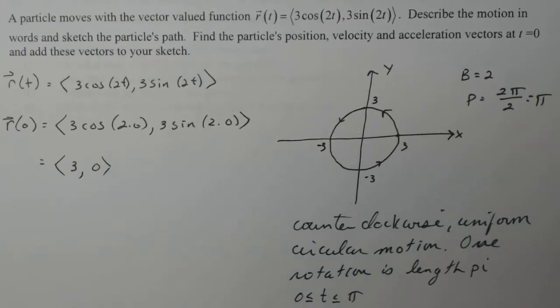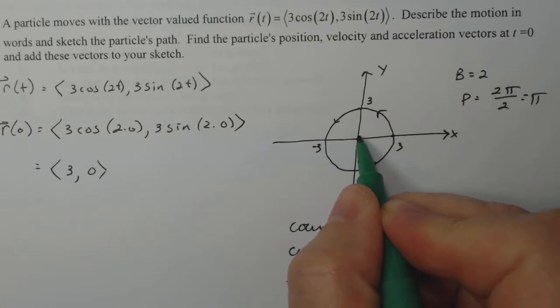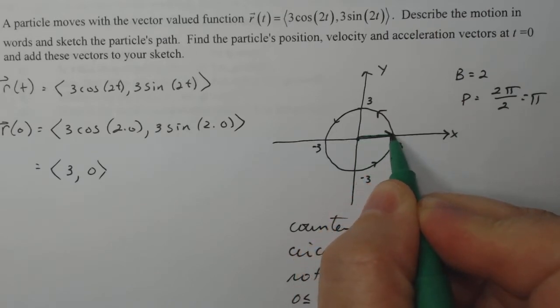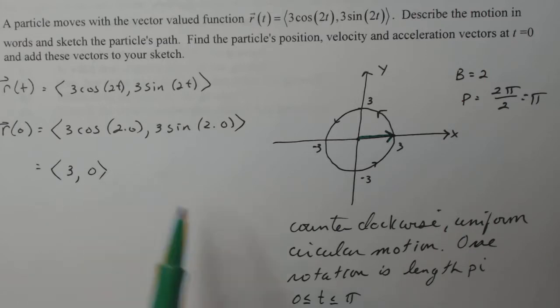Now I'm gonna add these vectors to my sketch. Let me see if I can find my colored pens to make it a little more interesting. So my position vector is the vector from the origin to the original position. So there is my position vector. Notice that it is three in the i direction, zero in the j direction.